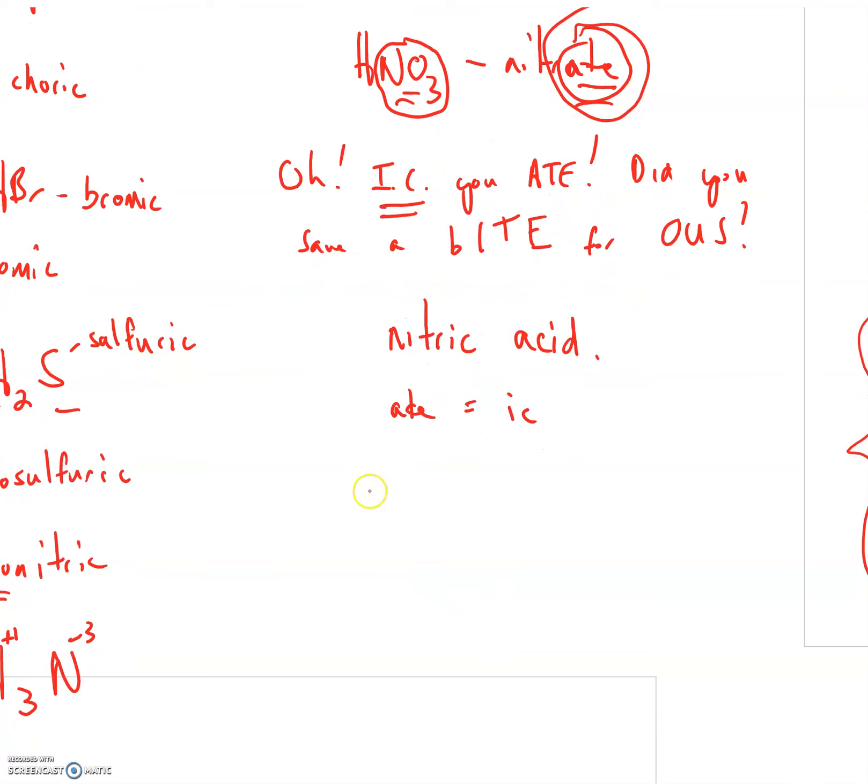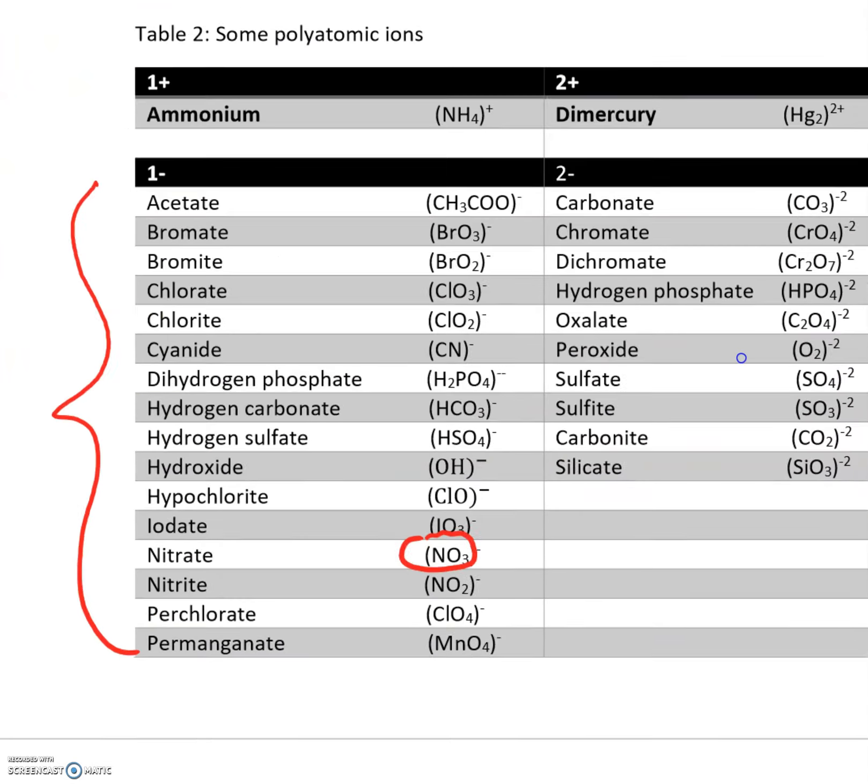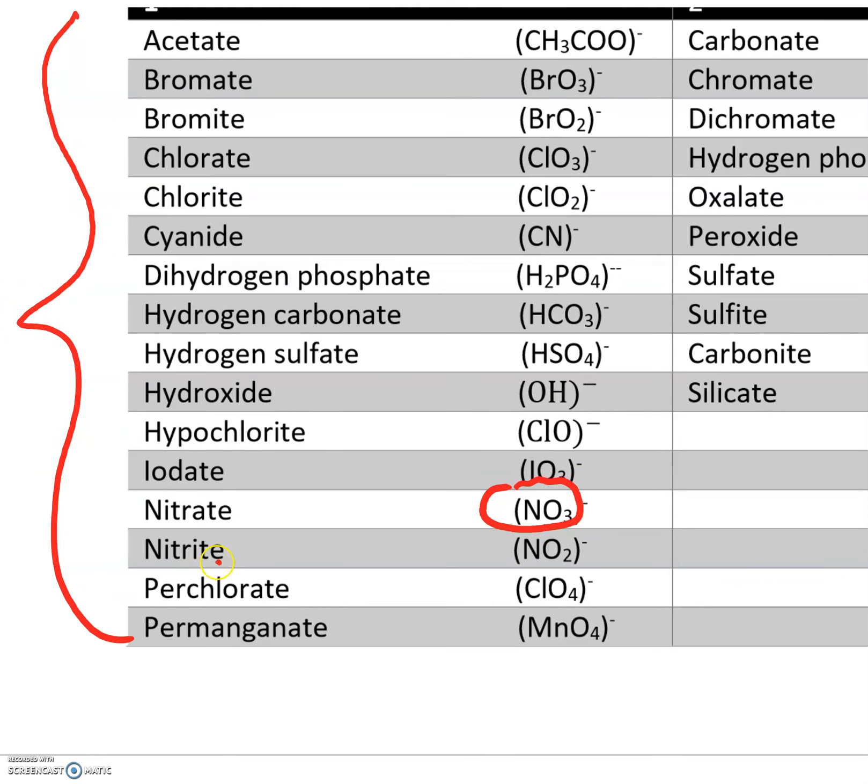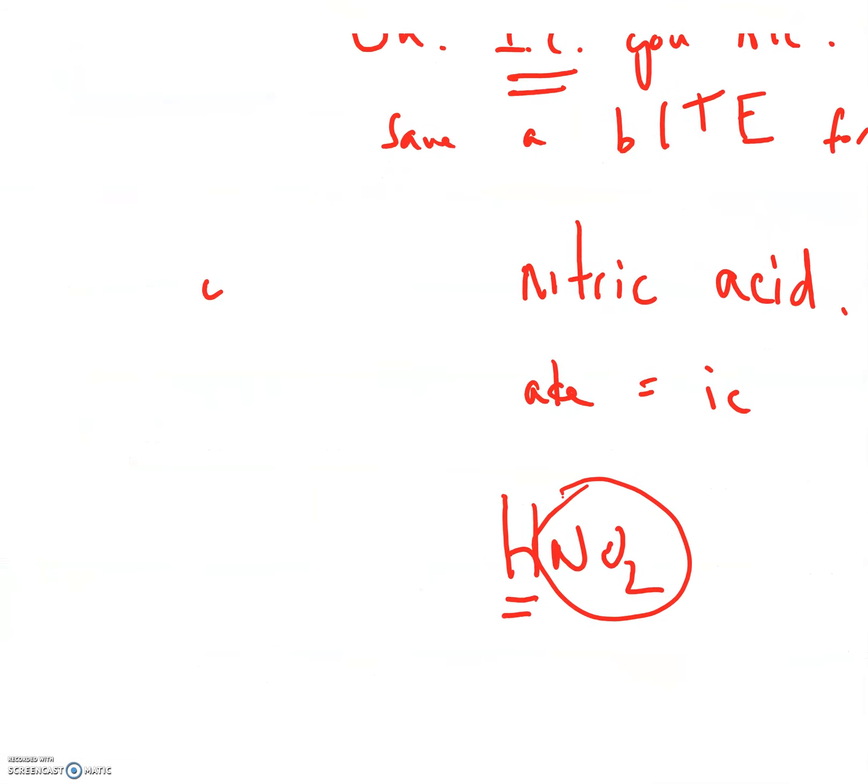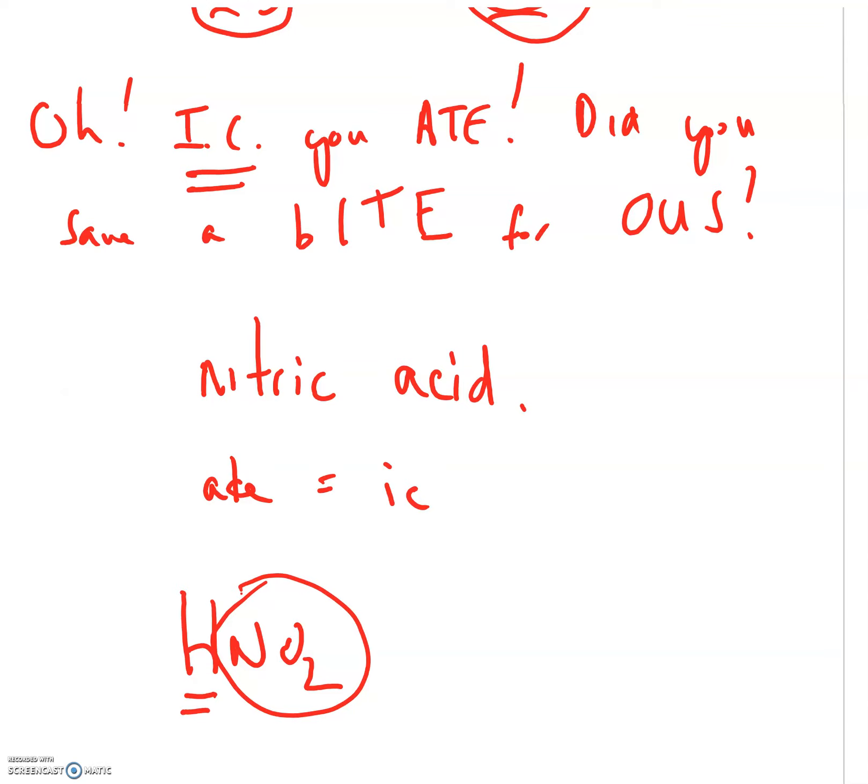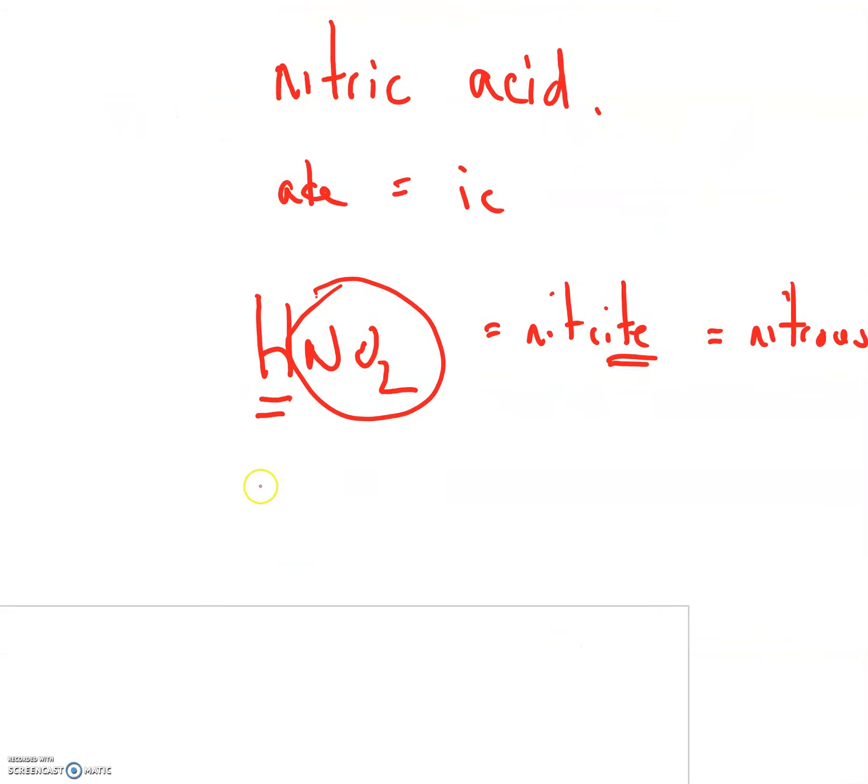Now, if it looked a little different, if it looked like this - HNO2. It's still an acid, still got H in it, but now the polyatomic ion is a little different looking. Now it looks like NO2. NO2 is not nitrate, now it's nitrite. That's going to get a different ending. Oh, I see you ate. Did you save a bite for us? Because nitrite looks a little different, we're going to change that nitrite to nitrous. And now this is nitrous acid.